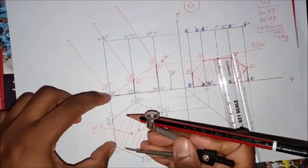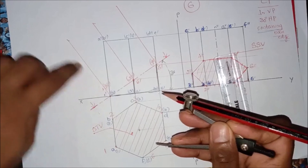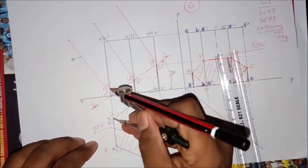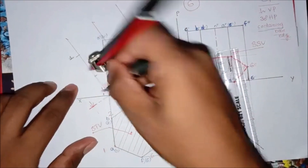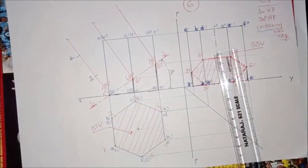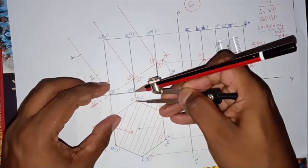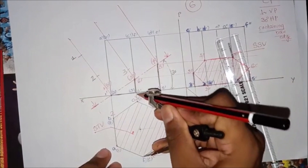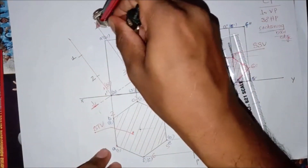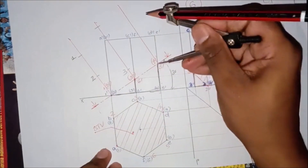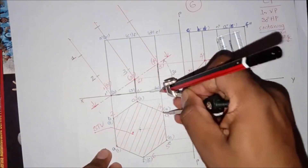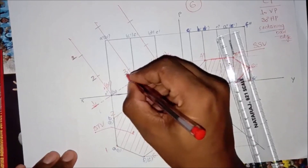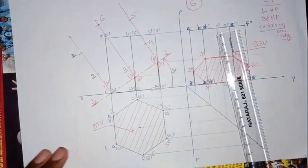Take the distance from point 1 to the XY line; 1 is the XY line. Drop a perpendicular from 1 to get true shape point 1. Then distance from 2 to the XY line, drop a perpendicular, and get true shape point 2. Similarly, take the distance from 3 to the XY line to get angle point 3 on the perpendicular. Then 6, 5, and 4 distances from the XY line are transferred similarly.